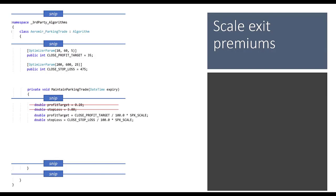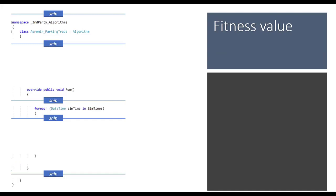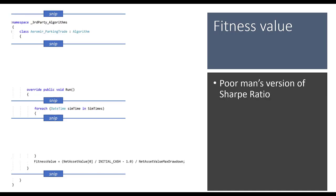In the run method, we define a fitness value for optimization. Multiple options exist: net asset value, maximum drawdown, or a poor-man's Sharpe ratio — which I chose — dividing the percentage gained over the simulation by the maximum drawdown. We assign this fitness value at the end of the simulation.